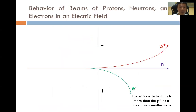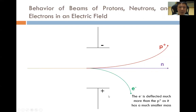Having said that, what happens when we pass beams of protons, neutrons and electrons through an electric field? An electric field can be thought of as one plate having a minus charge and one plate having a plus charge. When we pass a beam of protons through this electric field, because the proton is positively charged, the positive charge will be attracted to the negative plate and repelled by the positive plate.